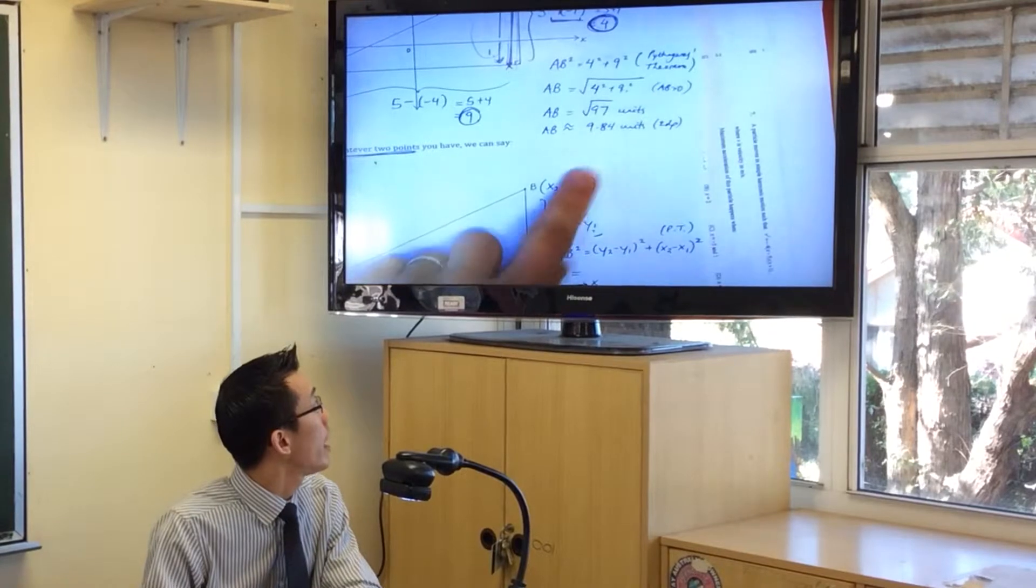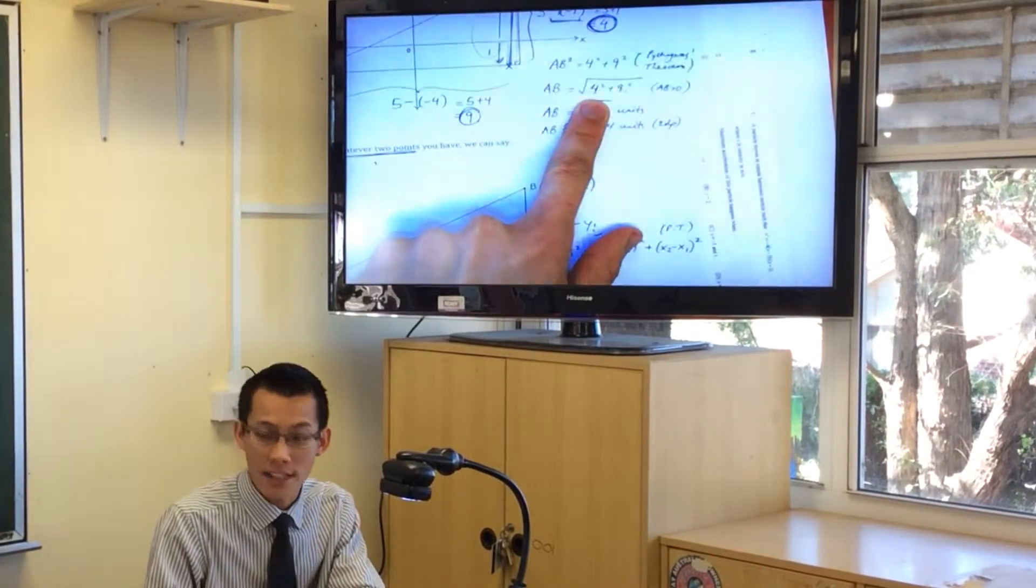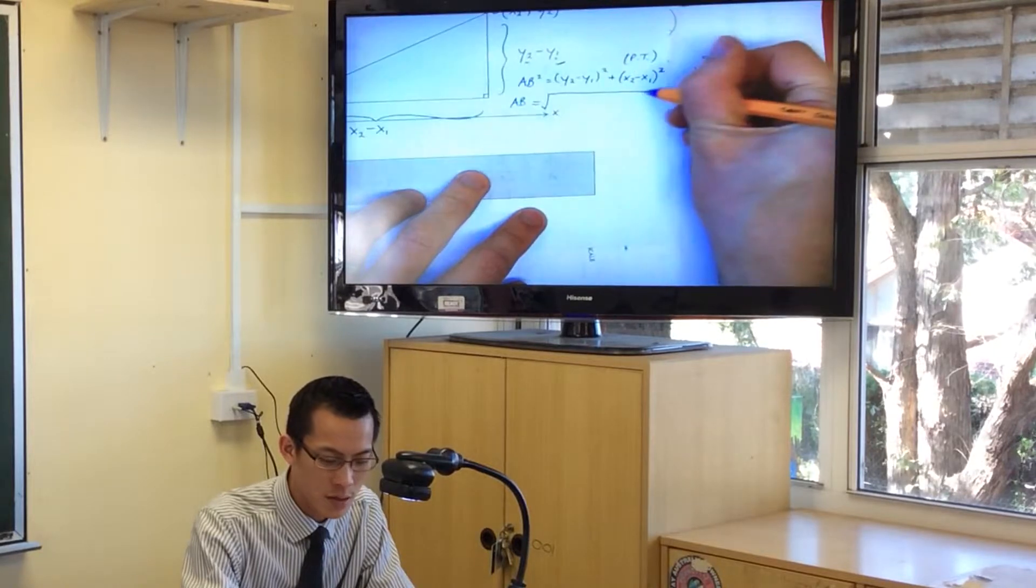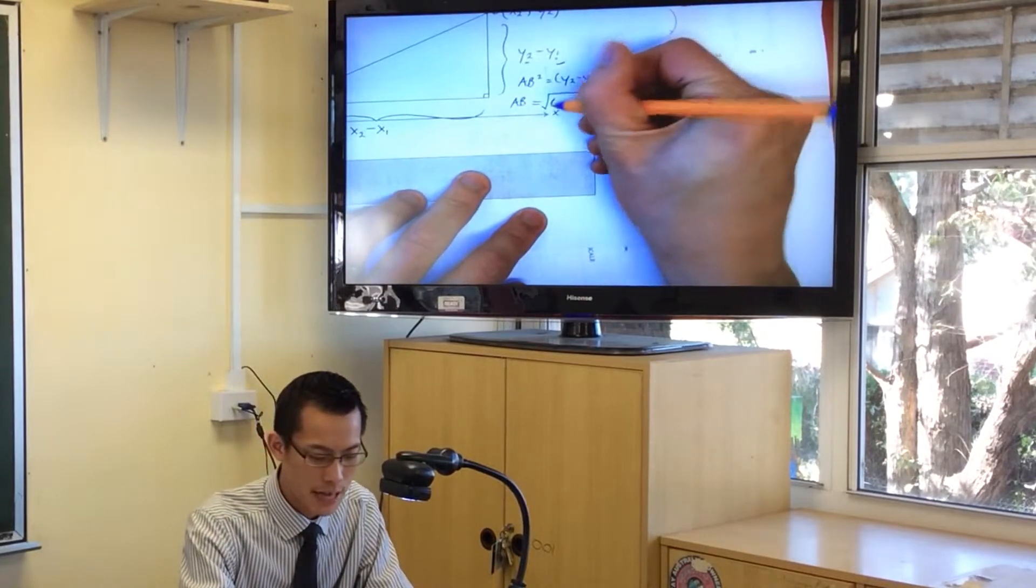So what did we do in the previous cases? Have a look there. Yeah, I took the square root, right? So I'm going to take the square root of this whole right-hand side. I know it's very long, right? But that's okay.